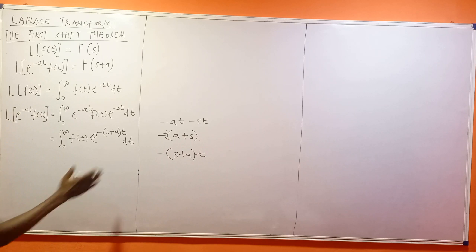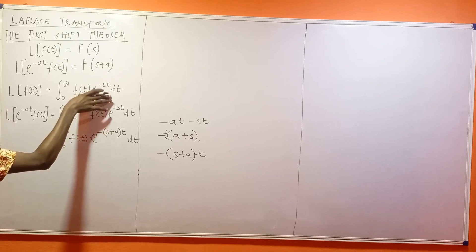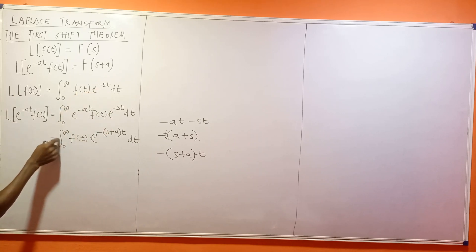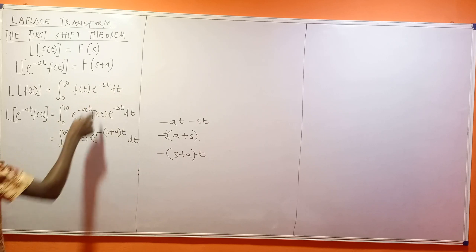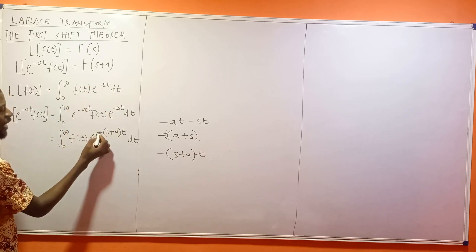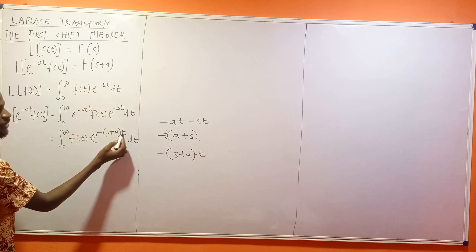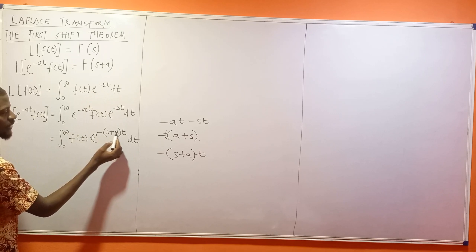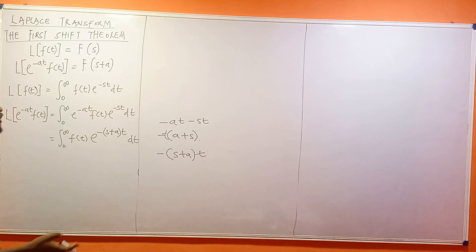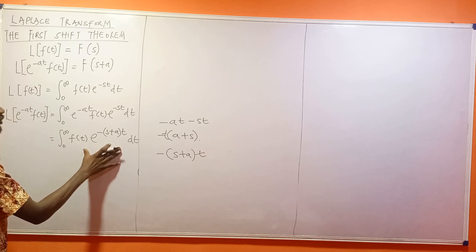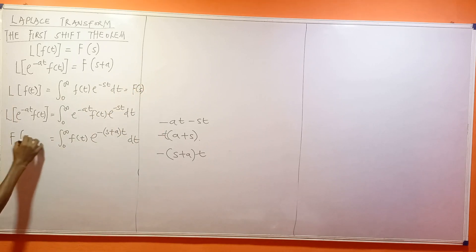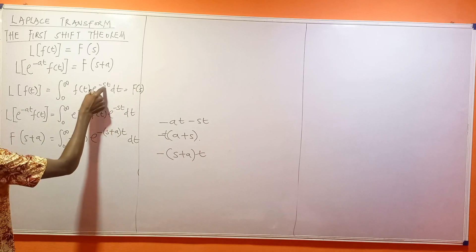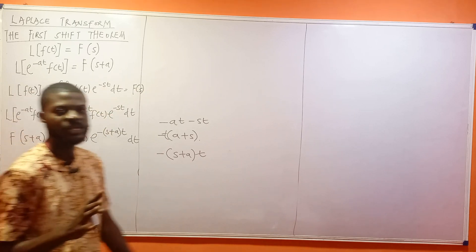This expression that I now have is actually similar to the first one. We have integral 0 to infinity, f(t), exponential, dt in both cases. Look at the powers — we have minus and t in both. The only difference is this s is now s plus a. So this tells me that each time I want to evaluate this expression, since everything here equals F(s), this one is going to become F(s + a), because my s has now been replaced with s plus a. That's the simple explanation.